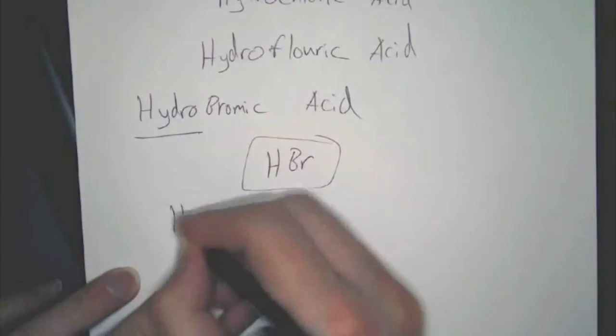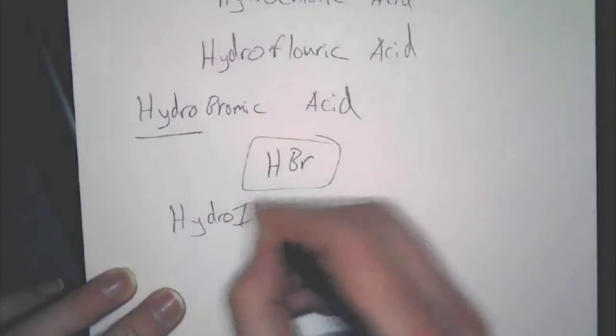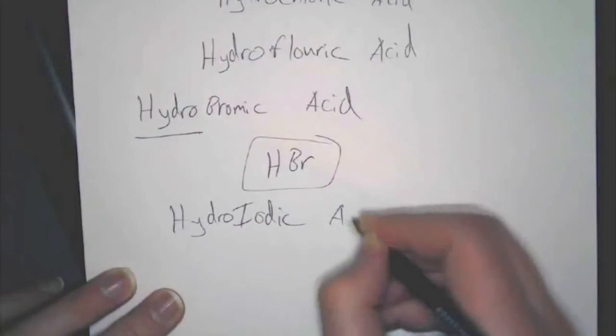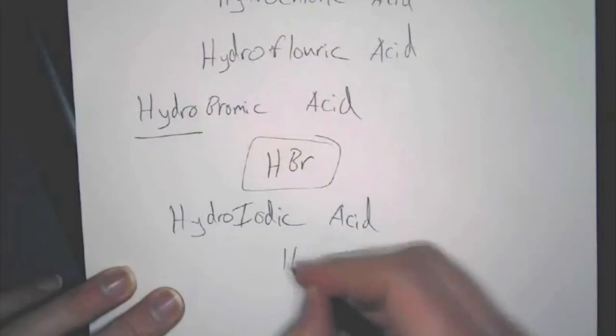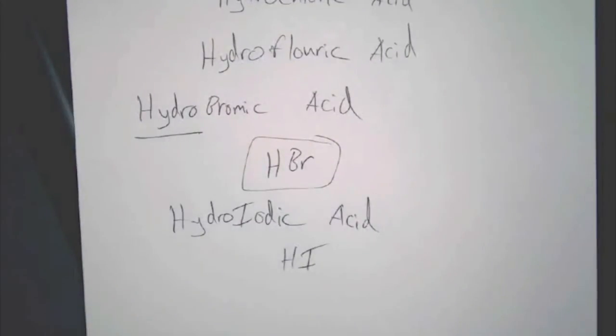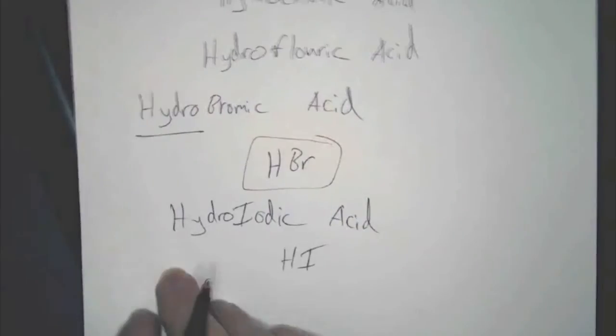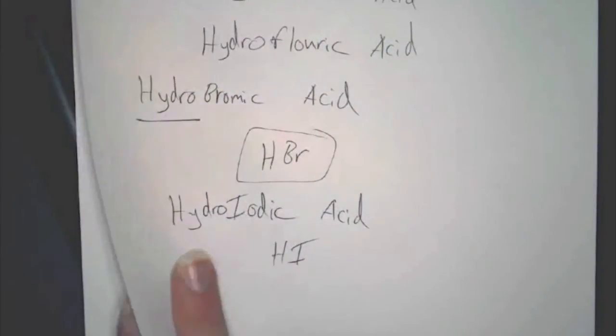Just to give you one other example, hydroiotic acid would be HI. So, that's binary. That's pretty straightforward. The next thing we're going to talk about are oxyacids.